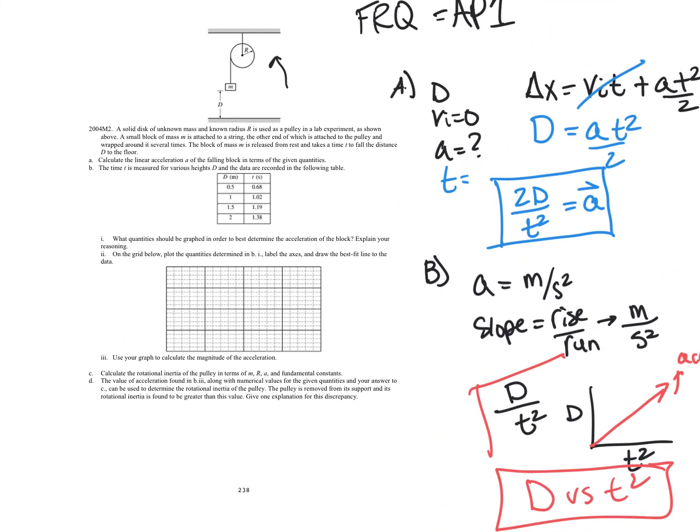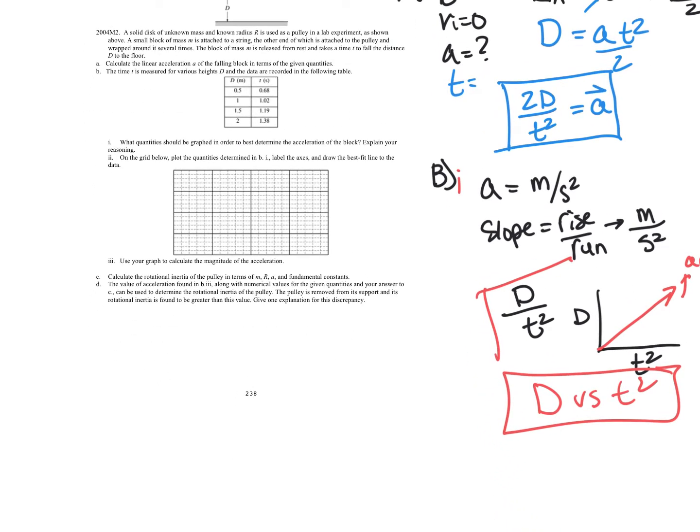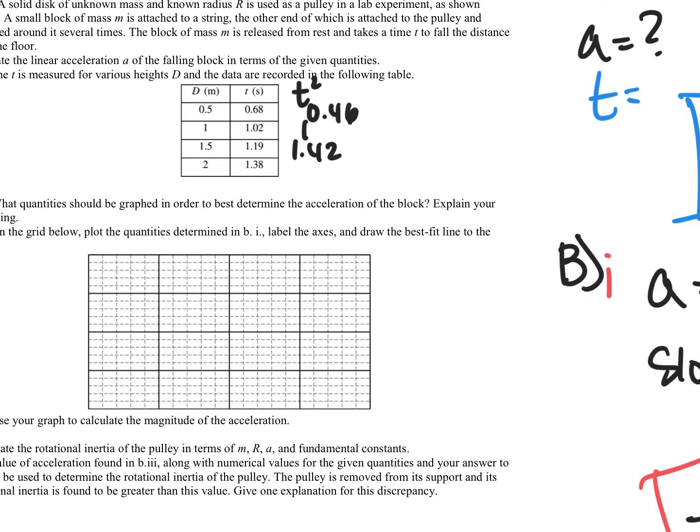Now they want us to plot the quantities and use them to calculate the magnitude of the acceleration. So here's this data table. We need to make T squared over here. So I'm going to make 0.68 squared, that gives me 0.46. I'm going to do 1.02 squared, I get roughly 1. I'm going to do 1.19 squared, and I get 1.42 approximately. And then I'm going to do 1.3 squared, and I get right at 1.9.